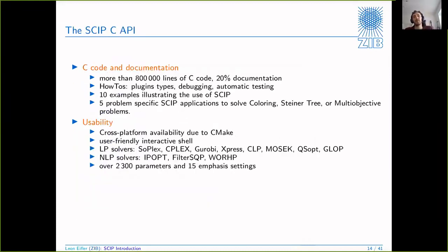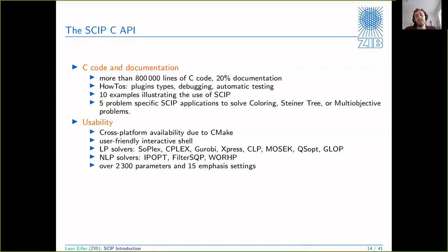There are more than 800,000 lines of code in SCIP, but because of this plugin-and-core concept you do not really have to worry about most of them. The code is very well documented - at least for academic code I have never seen documentation that thorough. Going further than just the in-code documentation, there are how-to guides on a lot of things in the online documentation, and there are also various examples and applications you can look at if you want to get started and don't know how to implement your first constraint handler.